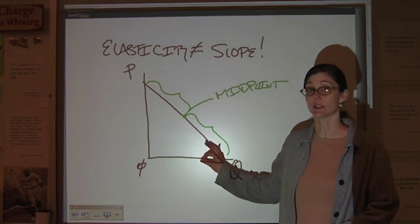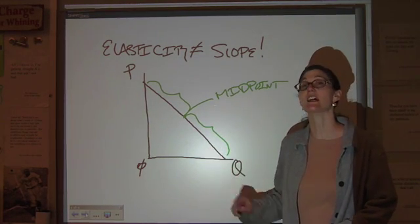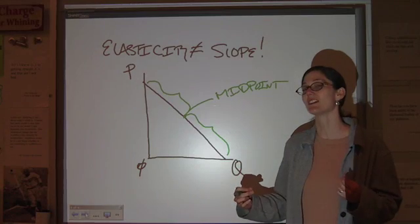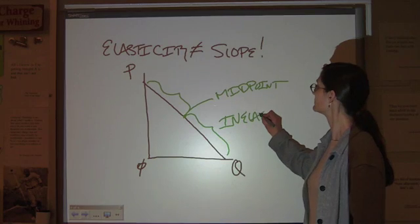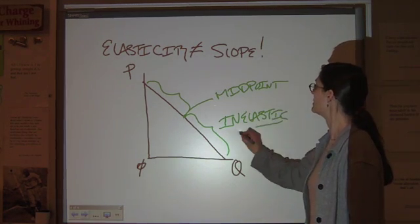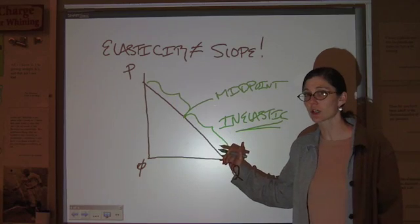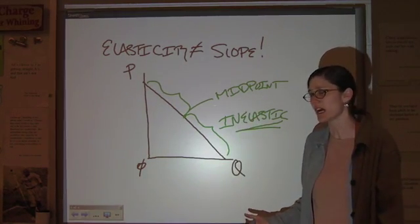At lower prices, products tend to be more price inelastic. So, lower half of the curve, more inelastic. Now, why is that?